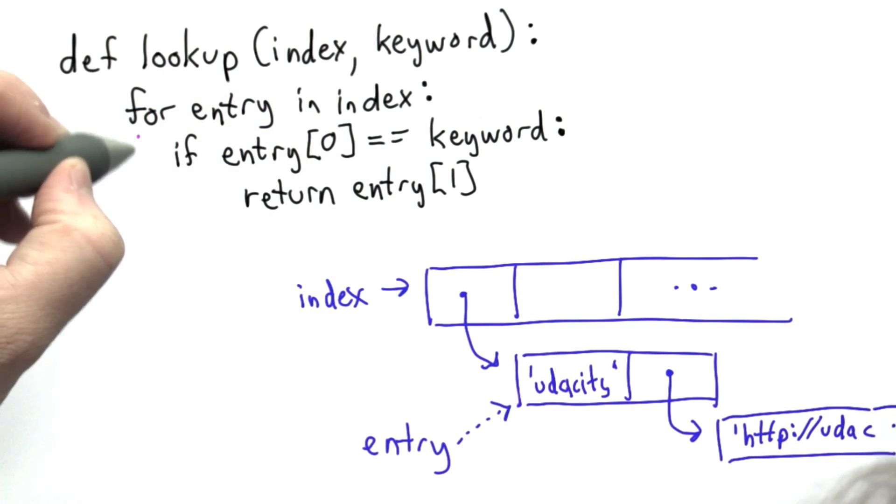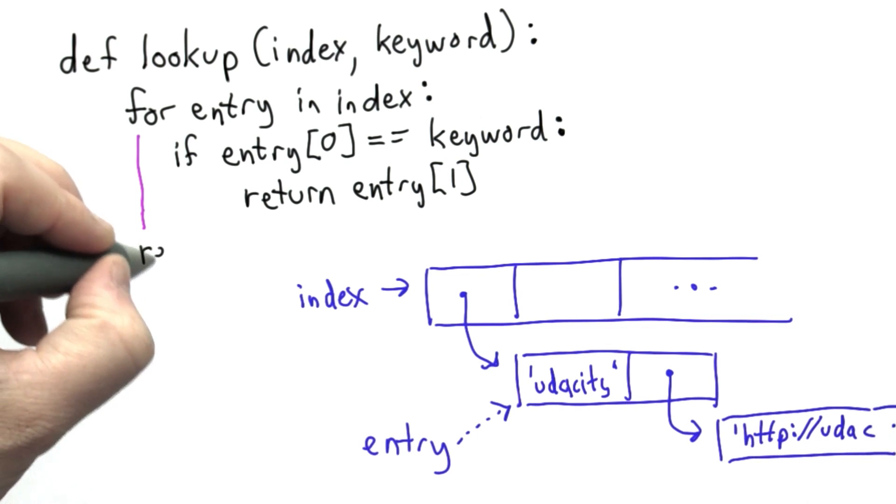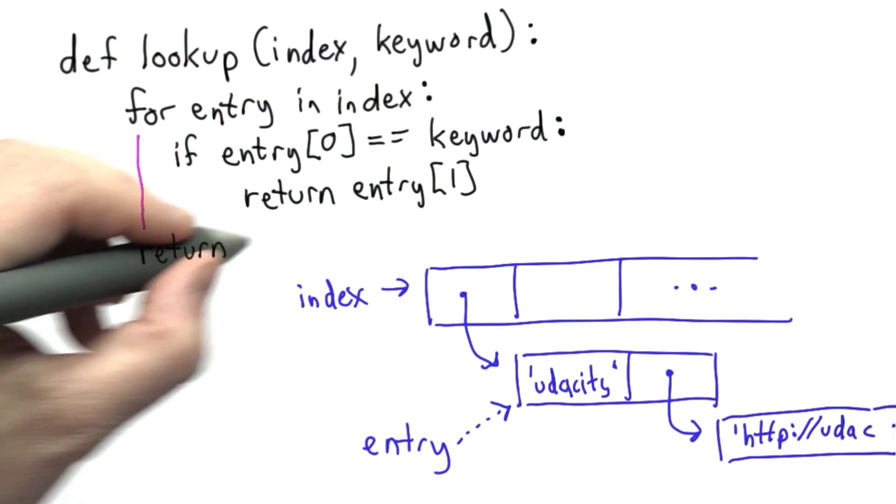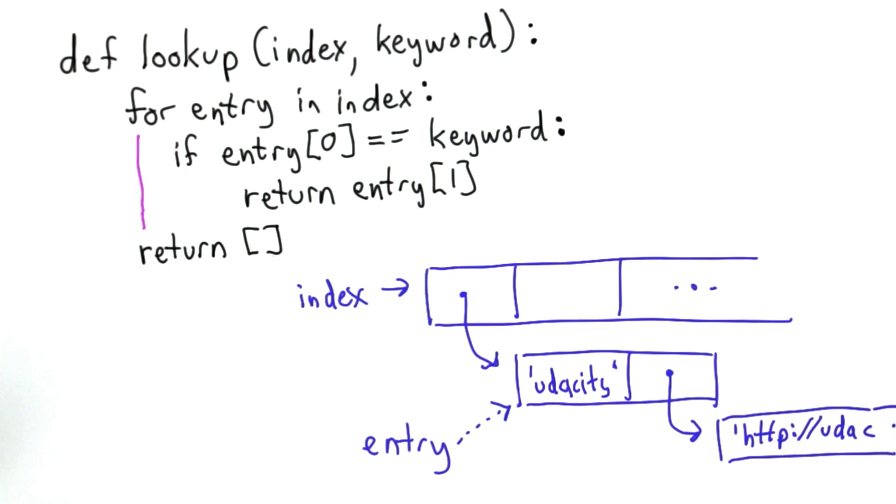If we get to the end of the list without finding that keyword, well then we still need to return something. And the way we describe lookup, what it should return is the empty list. That means there are no URLs that we've found so far that contain that keyword.